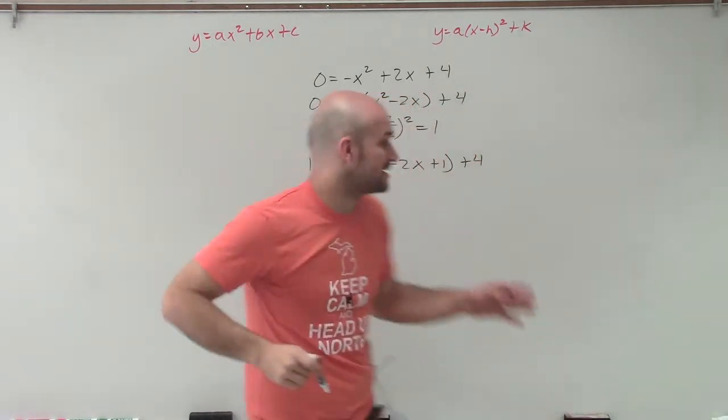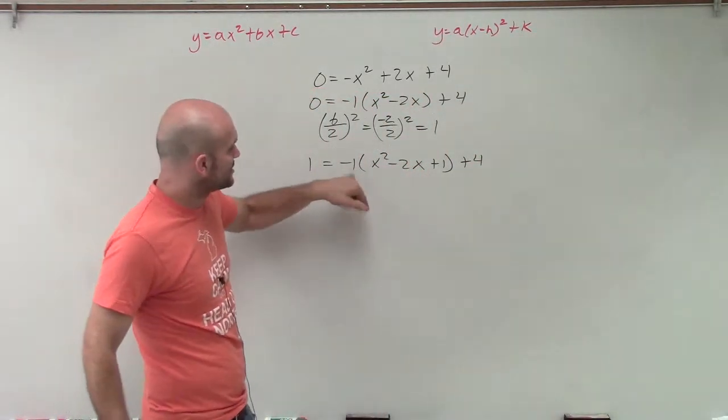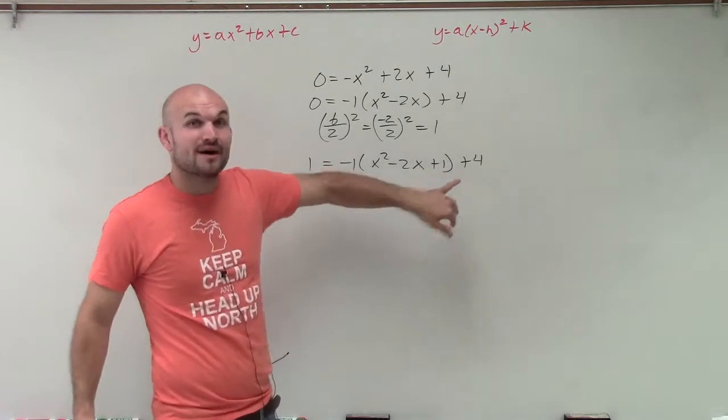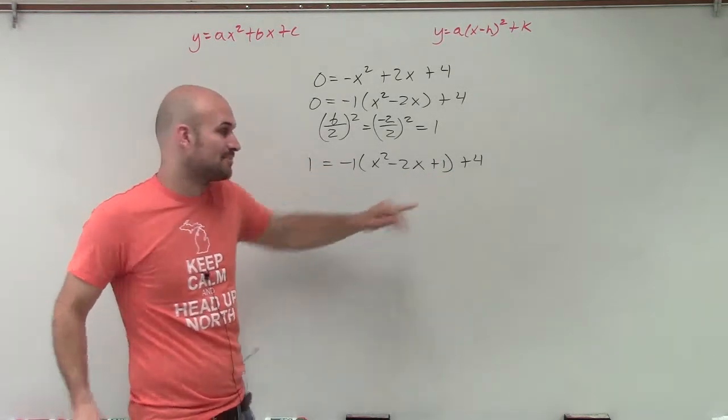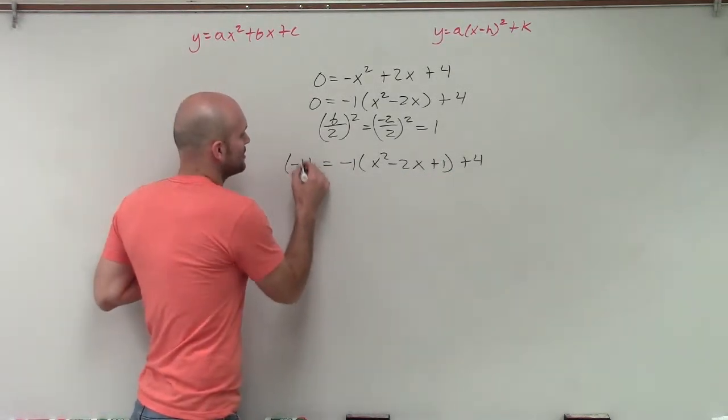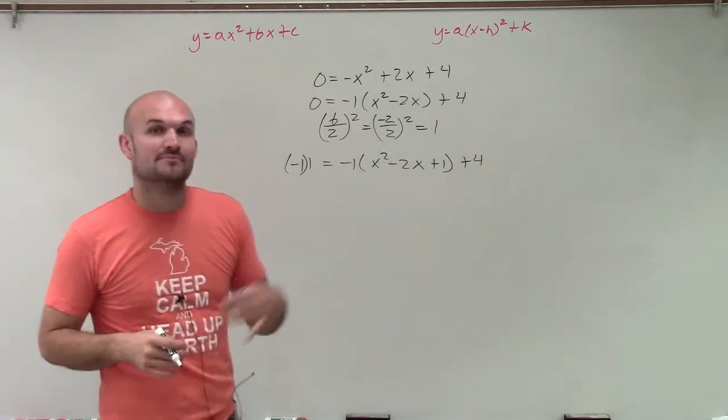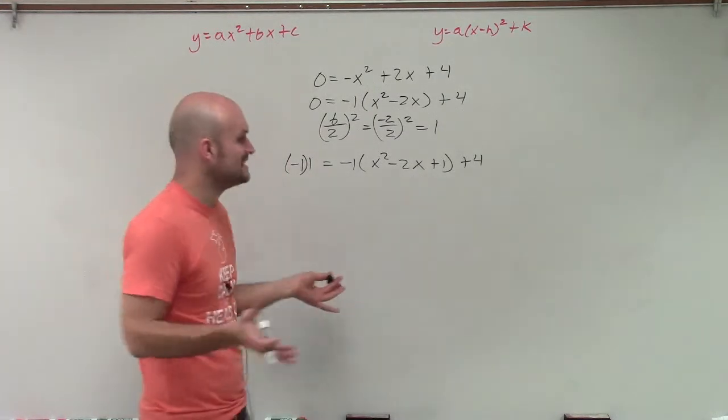However, I'm not done yet because since I factored out a number, I need to understand that this negative 1 is being multiplied by the number 1 that I added inside the parentheses. So therefore, I need to make sure I multiply it by the 1 that I added on the other side to make sure everything's equal.